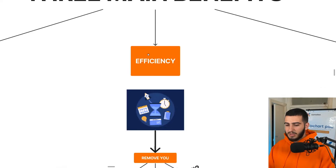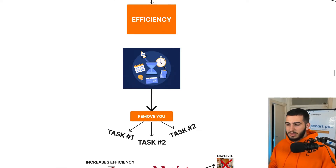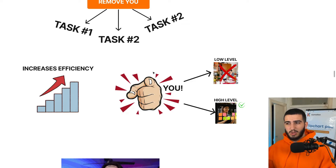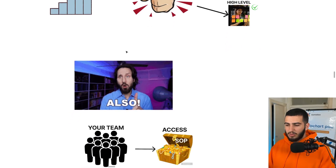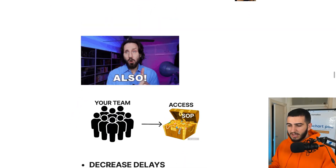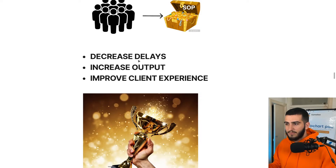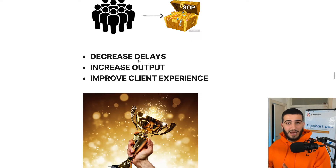The second benefit is efficiency. There's the obvious efficiency of removing yourself from different tasks within your agency — it removes you from low-level tasks and allows you to focus on high-level stuff like hiring new employees, focusing on partnerships, and talking to high-paying customers. But there's also additional efficiency: handing over these SOPs to your team will decrease delays, increase output, and improve the client experience. Someone needing help with a specific task can go directly to the SOP rather than wasting a senior person's time.